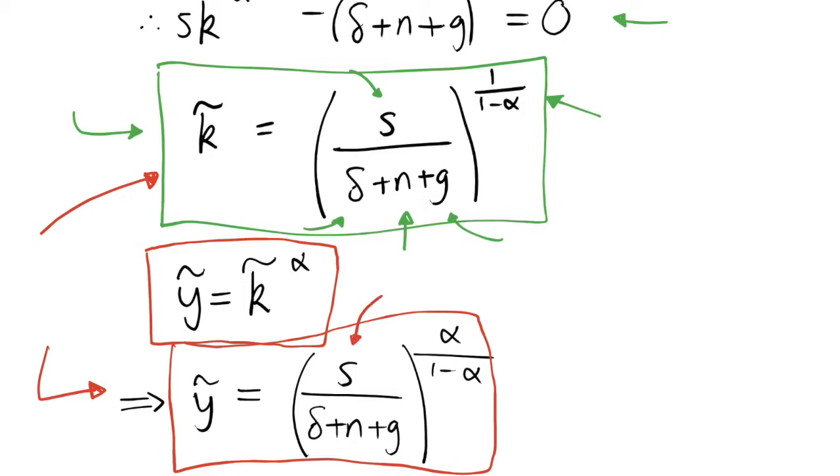So again it's going to positively depend on savings. If we increase savings we're going to increase investment which will then increase our balanced growth path level of output per effective worker, and it depends negatively on our sort of depreciation or break-even terms down here. And it will depend on our parameters, what fraction of national income goes to the capital stock and what fraction goes to the labor stock.